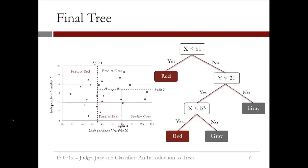A CART model is represented by what we call a tree. The tree for the splits we just generated is shown on the right. The first split tests whether the variable x is less than 60. If yes, the model says to predict red, and if no, the model moves on to the next split. Then the second split checks whether or not the variable y is less than 20. If no, the model says to predict gray, but if yes, the model moves on to the next split.